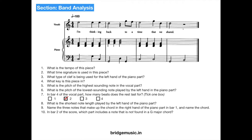In bar 2 of the score, which part includes a note that is not found in the key of G major? There is an F note in bar 2 which is not found in the key of G major, because G major uses F sharp. All the other parts are using G, D, and G-B-D — they are not using any note which is not found in G major. The correct answer is the vocal part.